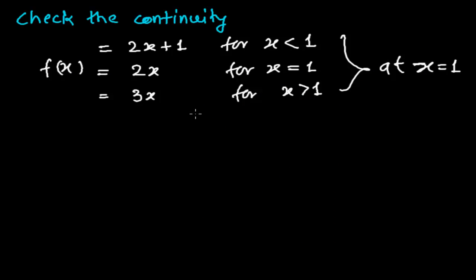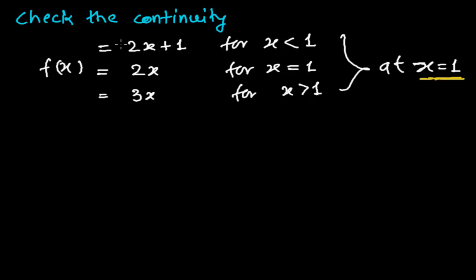Hi friends, welcome once again. In the previous video we checked continuity with two conditions, but now there are three conditions. We need to check the continuity of this function at x equals 1. As we've learned previously, the main condition for continuity is: the left hand limit should equal the right hand limit, and both should equal the value of the function at x equals 1.